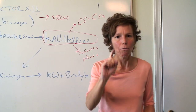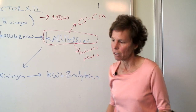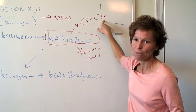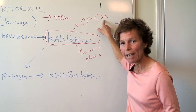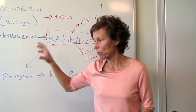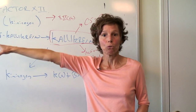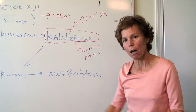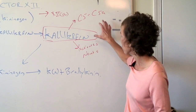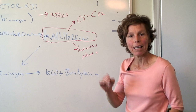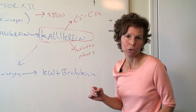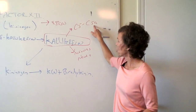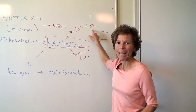So what does kallikrein do? One of the things it does is it splits C5 into C5a. Remember, C5a is an anaphylatoxin that was activated through the complement pathway — not only alternative complement, but also classical complement. And it was also a chemotactic agent for neutrophils, so straight away we can see that it's going to attract neutrophils to the fight.